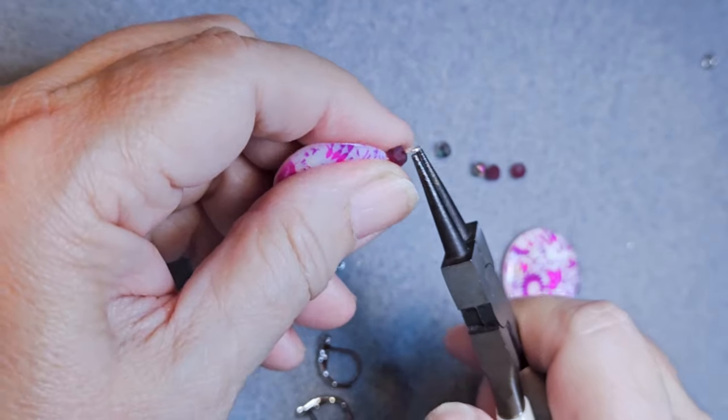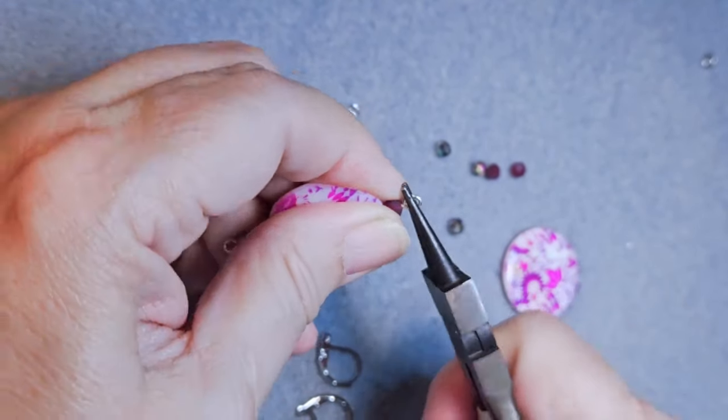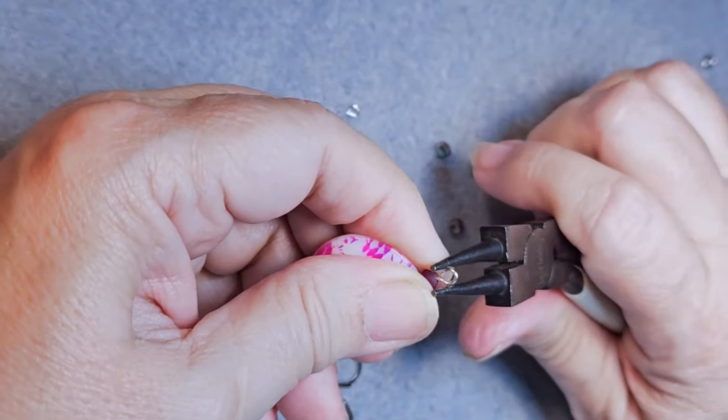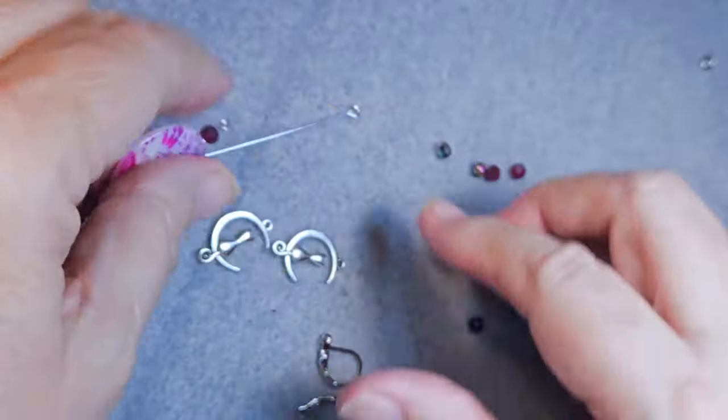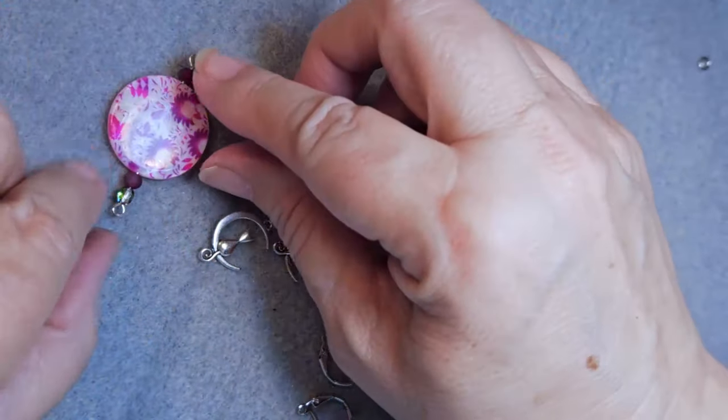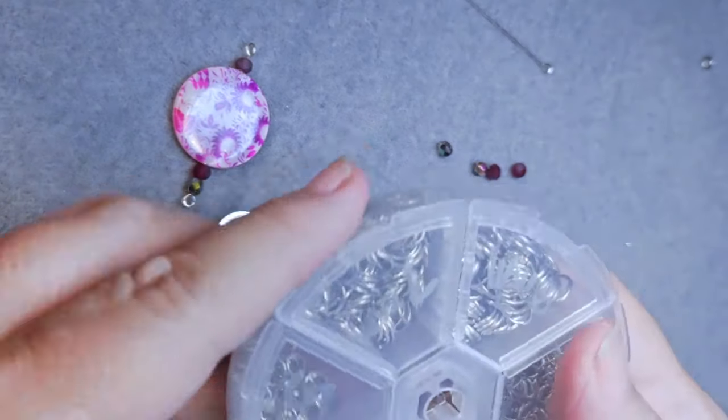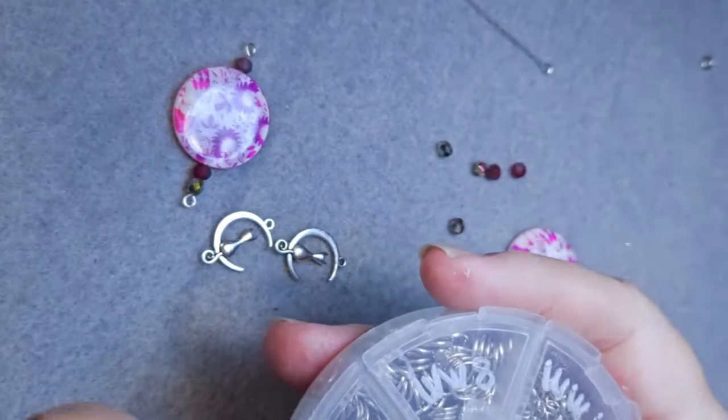And then I'm going to take these and straighten out that loop. Make sure both loops are on the same plane. If you want them vertical, make sure they're both vertical. Horizontal, make sure they're both horizontal so that they'll hang correctly.